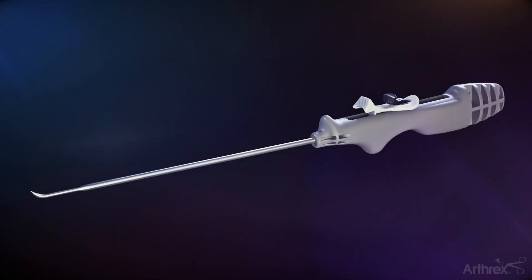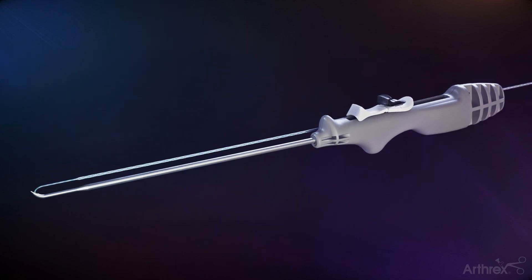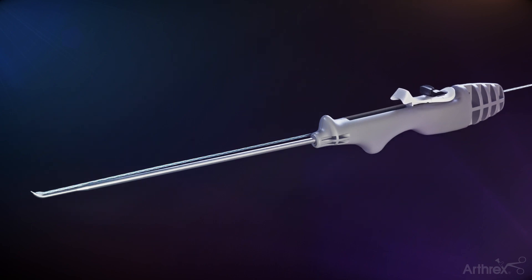Outside the arthroscopic cannula, expose the nitinol jaws of the capsule stitch suture passer by pushing the white sliding actuator down and forward towards the shaft of the device. Once the jaws are exposed, cut the glued portion of the suture and load approximately 5 mm into the nitinol jaw of the suture passer. Push down and then pull the white sliding actuator backward to pull the suture into the needle of the device.